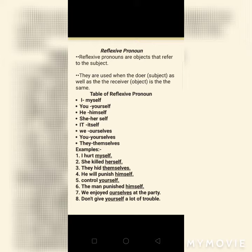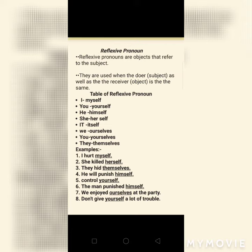Now we see examples. I hurt myself. Main maari jyatne ija pojade. Means I ee potej kriyaya karay chhe potea ne hurt karwaani. So friends, I nun reflexive pronoun thashe myself. Tethi sentence pattern maa: I (subject), hurt (verb), and myself (object). I ane myself ee karta ane receiver pojaj chhe.